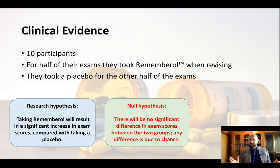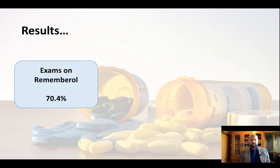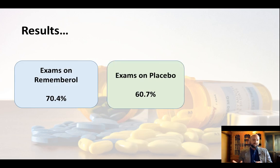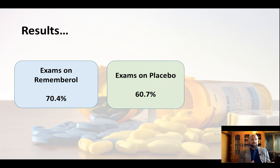So let's imagine I've conducted my study and tested Remembrol and the placebo, and here's what happens. When the students took Remembrol, they got on average 70%; when they took the placebo, they got 60%. If I didn't go any further past this, this is looking pretty good — you might be thinking you got a 10% increase in your exam scores when you take this drug.